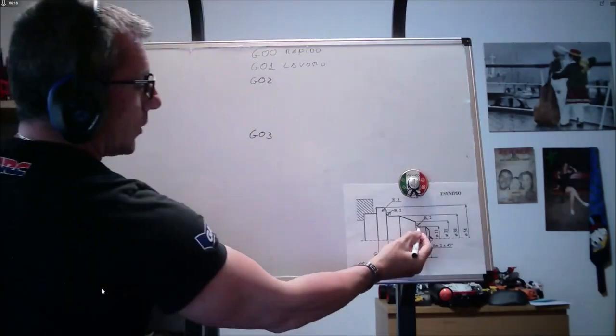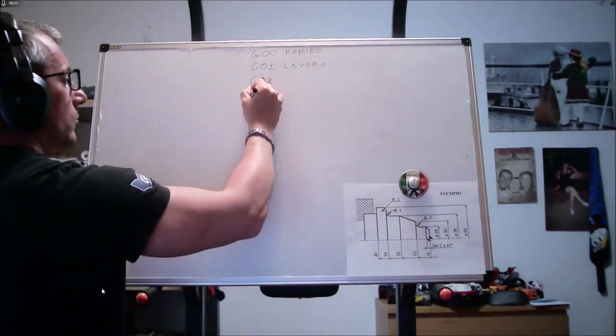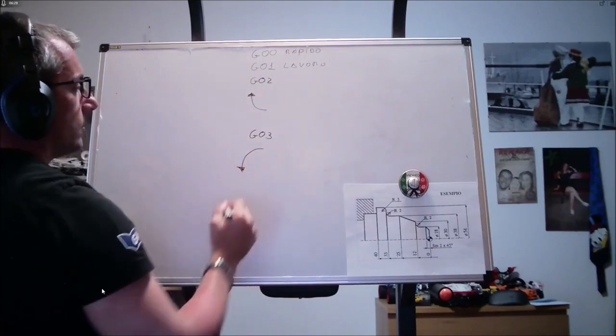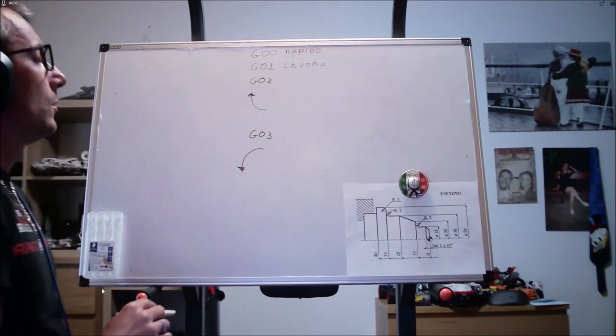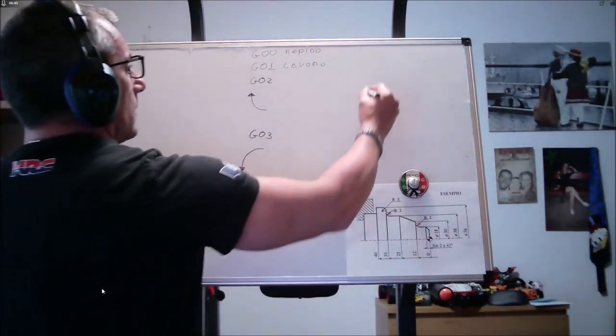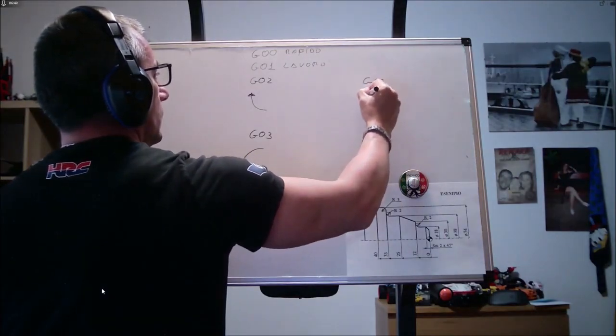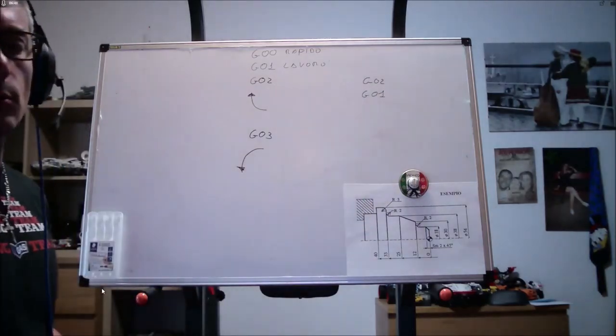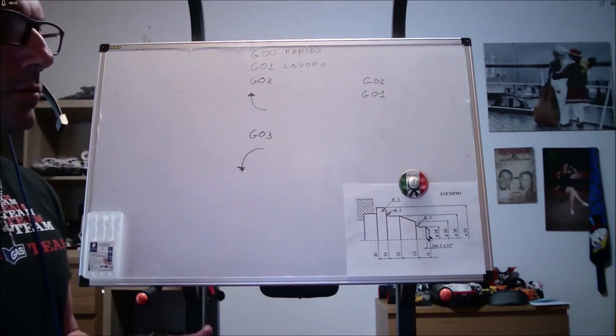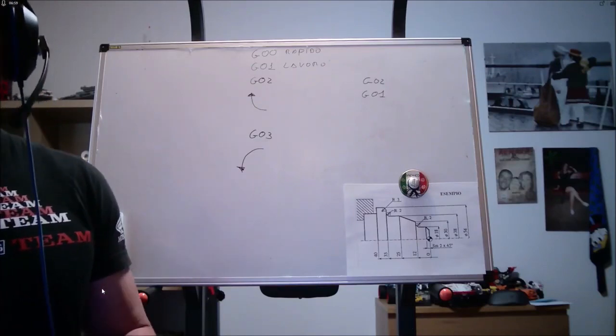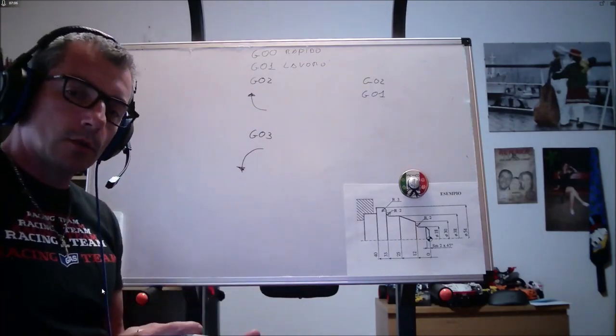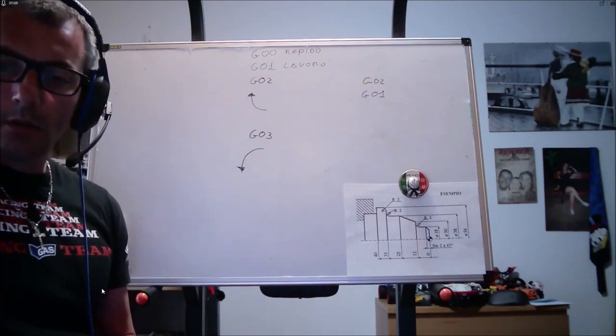Dobbiamo cominciare a pensare a un'interpolazione che sia circolare. Ecco che G1 si trasforma in G02 o G03. G02, come in questo caso, interpolazione circolare con movimento orario. G03, interpolazione circolare con movimento anti-orario. Se io ho un movimento di interpolazione lineare compresa tra due rette, dovrò sempre scrivere G02 seguita da G01. Altrimenti, la macchina richiederà una nuova interpolazione circolare.